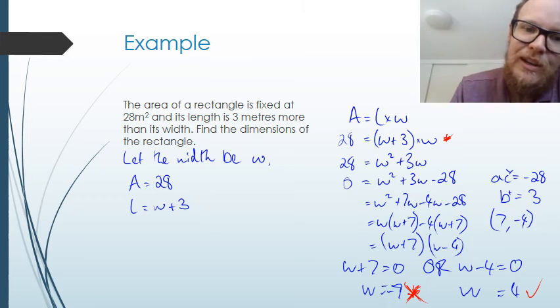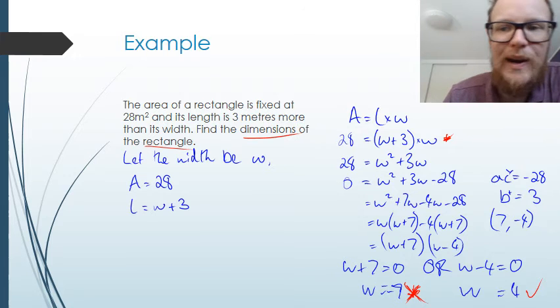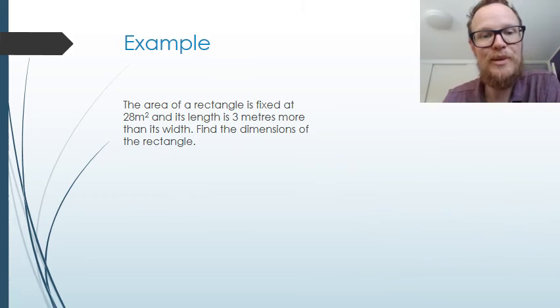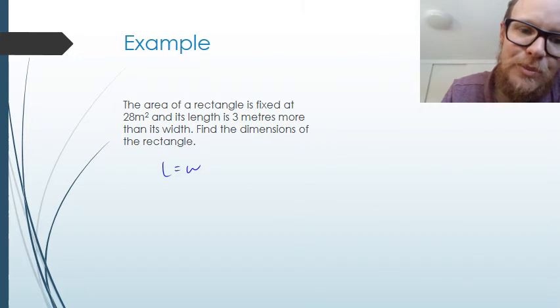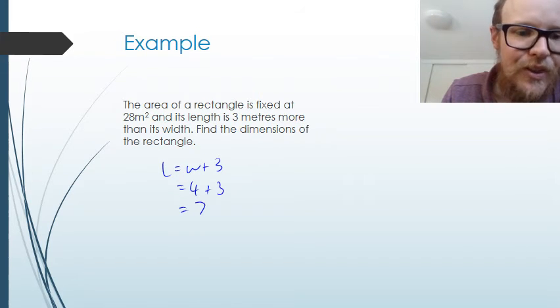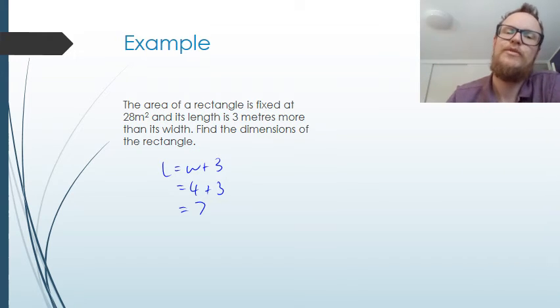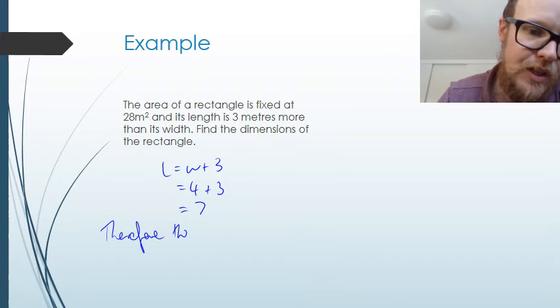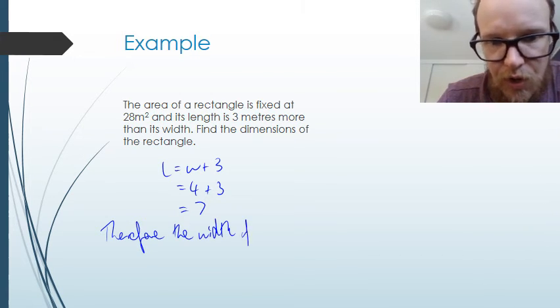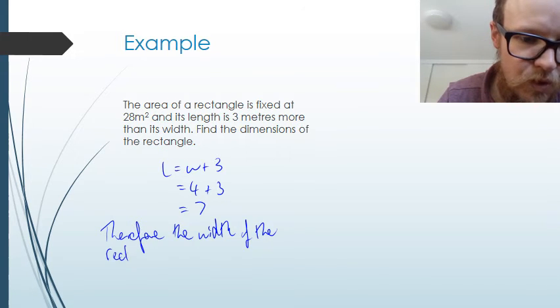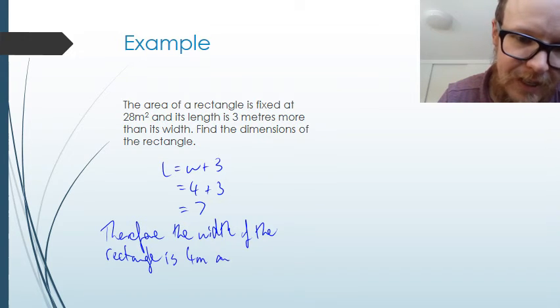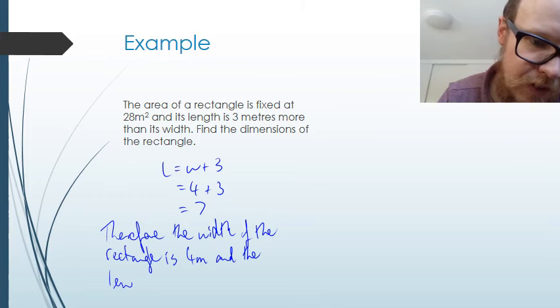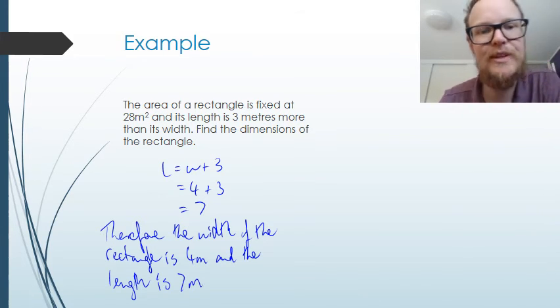But have we answered the question? No, we have not. Dimensions of the rectangle. That is what we are asked for. So we know that w equals 4, but we know that length equals w plus 3. 4 plus 3. The length is 7. And then we answer in a sentence. Answer in a sentence. Therefore, the width of the rectangle is 4 meters. And the length is 7 meters. And there we go. We've answered the question.